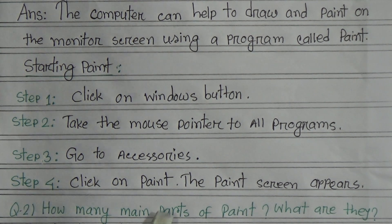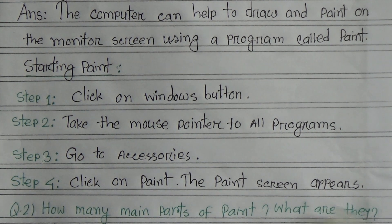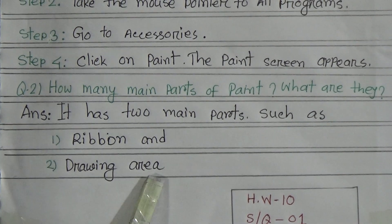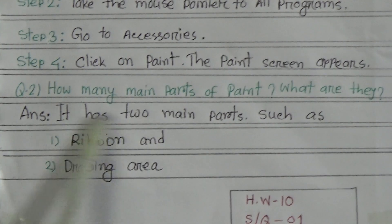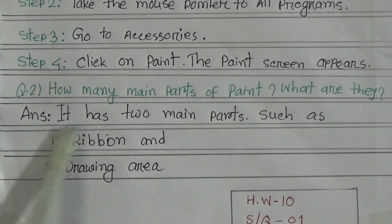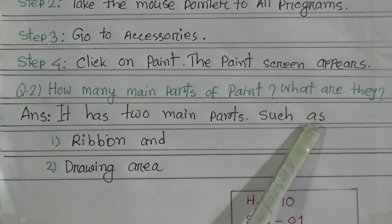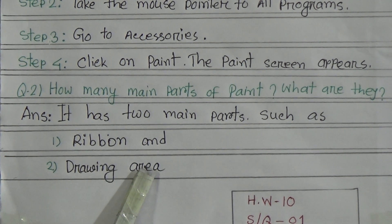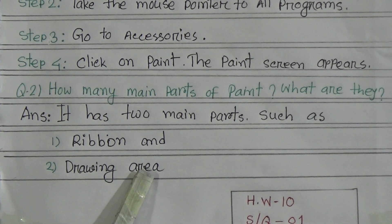Question number 2: How many main parts does Paint have, and what are they? Answer: It has two main parts — such as Ribbon and Drawing Area.